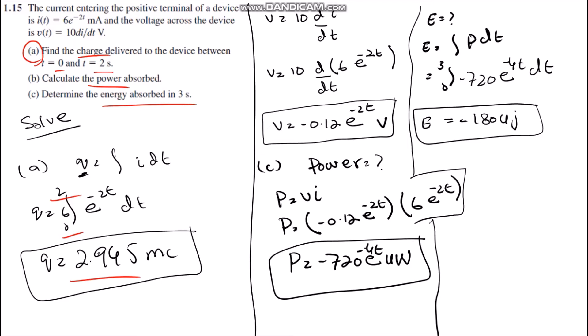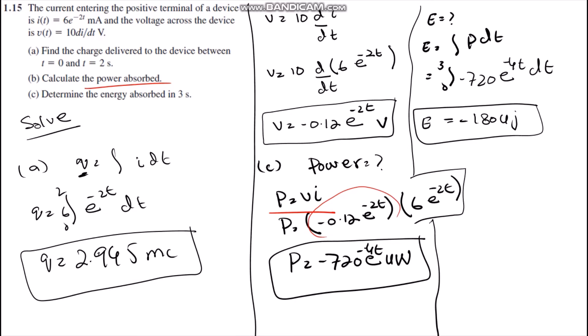In the question, the voltage is given. The V over dI/dt means we have to take the derivative of current, which is also given in the question. After taking the derivative and performing some mathematical calculations, we get the value of the voltage, which is minus 0.12 e^(−2t) volts.